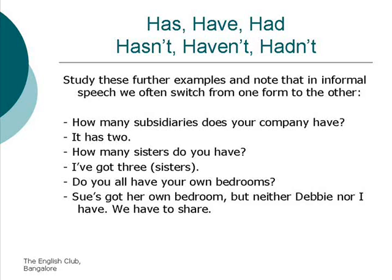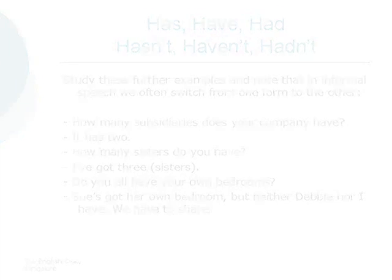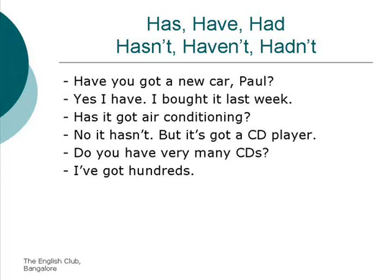Note: in this last example, 'have to' is used as an alternative to 'must' because the need to share is imposed on the sisters. Have you got a new car, Bob? Yes, I have. I bought it last week. Has it got air conditioning? No, it hasn't. But it's got a CD player. Do you have very many CDs? I've got hundreds.